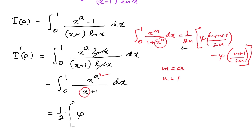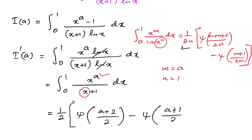Therefore our integral I'(a) is equal to 1 over 2 (since n equals 1) times [digamma of (a plus 2) over 2 minus digamma of (a plus 1) over 2].